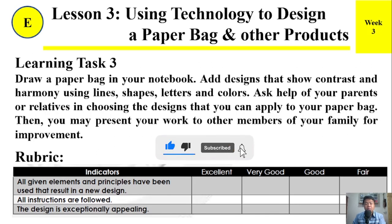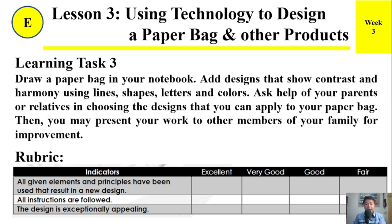Learning task number 3. Draw a paper bag in your notebook. Add designs that show contrast and harmony using lines, shapes, letters, and colors. Ask help from your parents or relatives in choosing the design that you can apply to your paper bag. Then you may present your work to other members of your family for improvement. This is the rubric. All given elements and principles have been used, resulting in a new design. All instructions are followed and the design is exceptionally appealing.